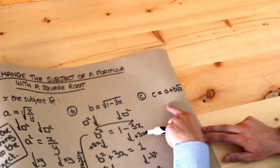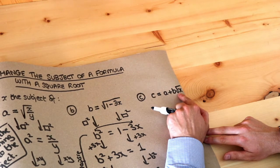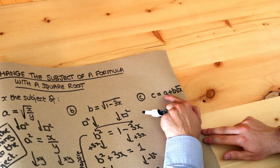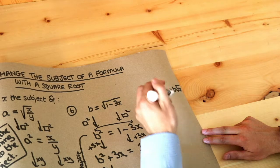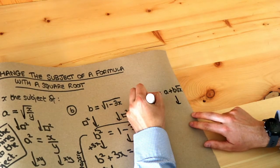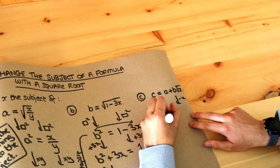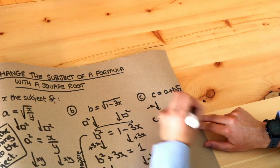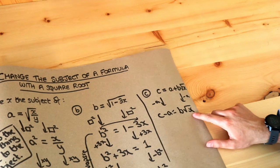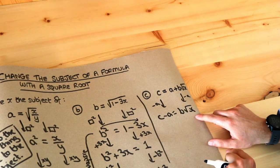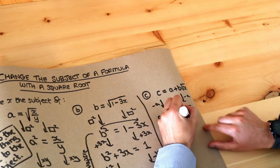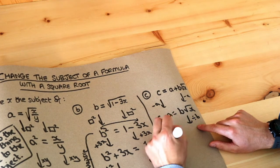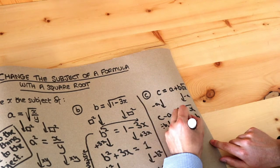What about this last one? x is being square rooted, then times by b, then we added a to it — those two things are being added together. So we subtract a from both sides to get rid of that plus a, giving c minus a on the left and b root x on the right. Now x is being square rooted then times by b, so we divide both sides by b to get rid of that times by b. That puts c minus a all over b, leaving root x.